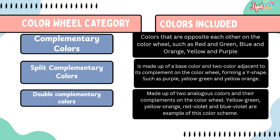Complementary colors are opposite each other on the color wheel, such as red and green, blue and orange, and yellow and purple. The split complementary color scheme is made up of a base color and two colors adjacent to its complement on the color wheel, forming a V shape — such as purple, yellow-green, and yellow-orange. The double complementary colors are made up of two analogous colors and their complements on the color wheel, for example yellow-green, yellow, red-violet, and blue-violet.